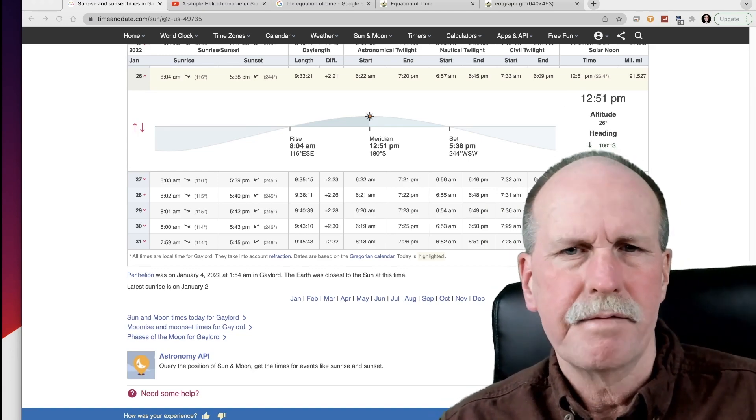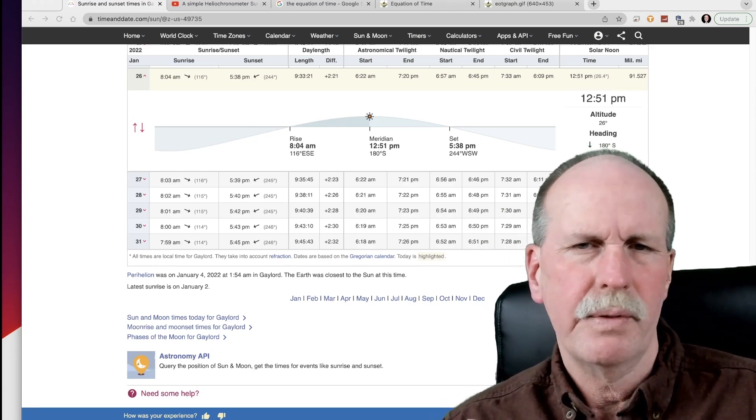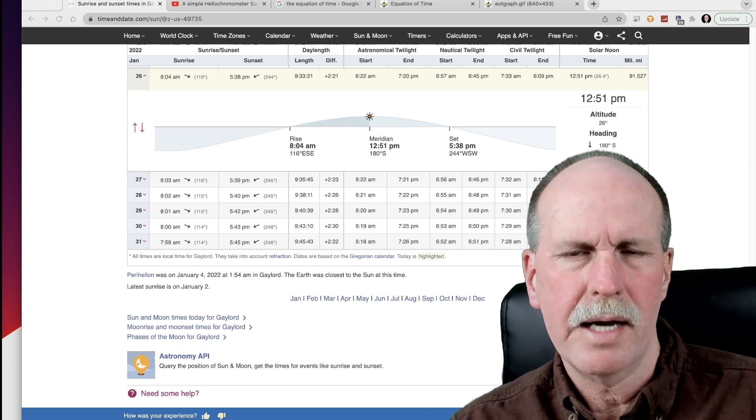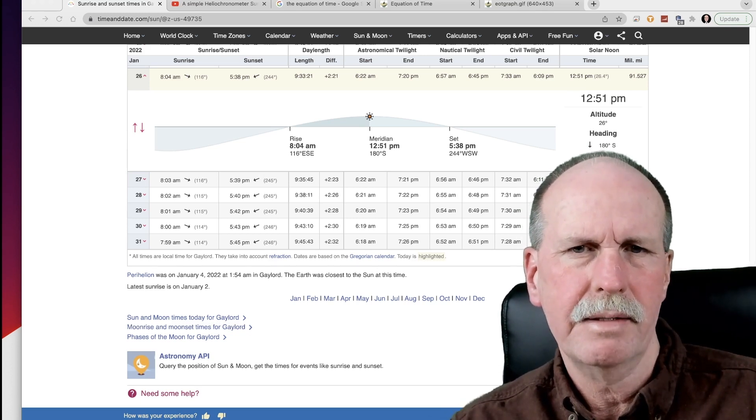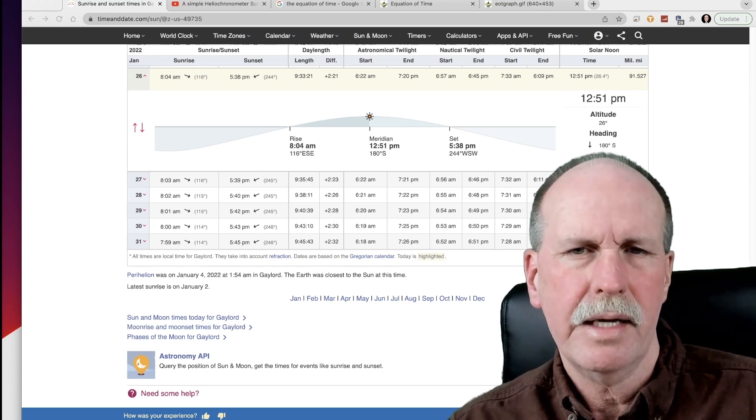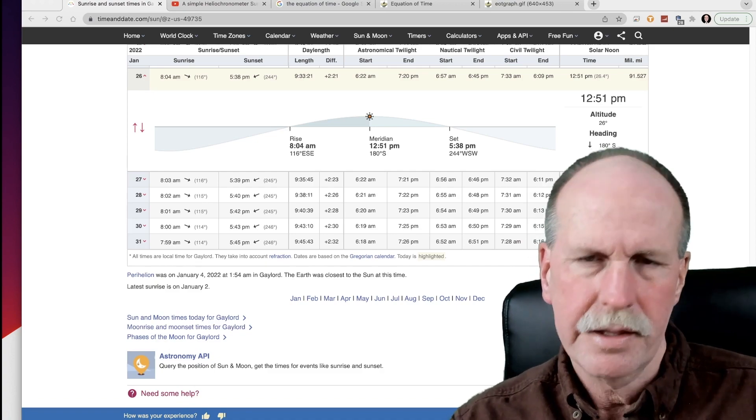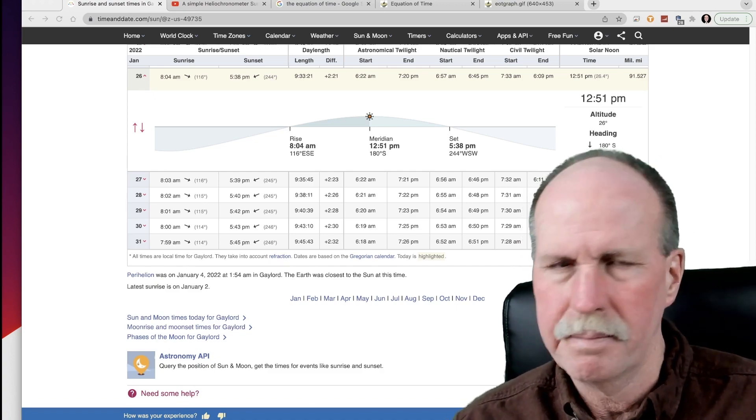Now the other day I put out a video on twilight and we talked about the three different types of twilight. We talked about civil twilight, nautical twilight, and astronomical twilight. They're marked on the astrolabe as well. Let's have a look.